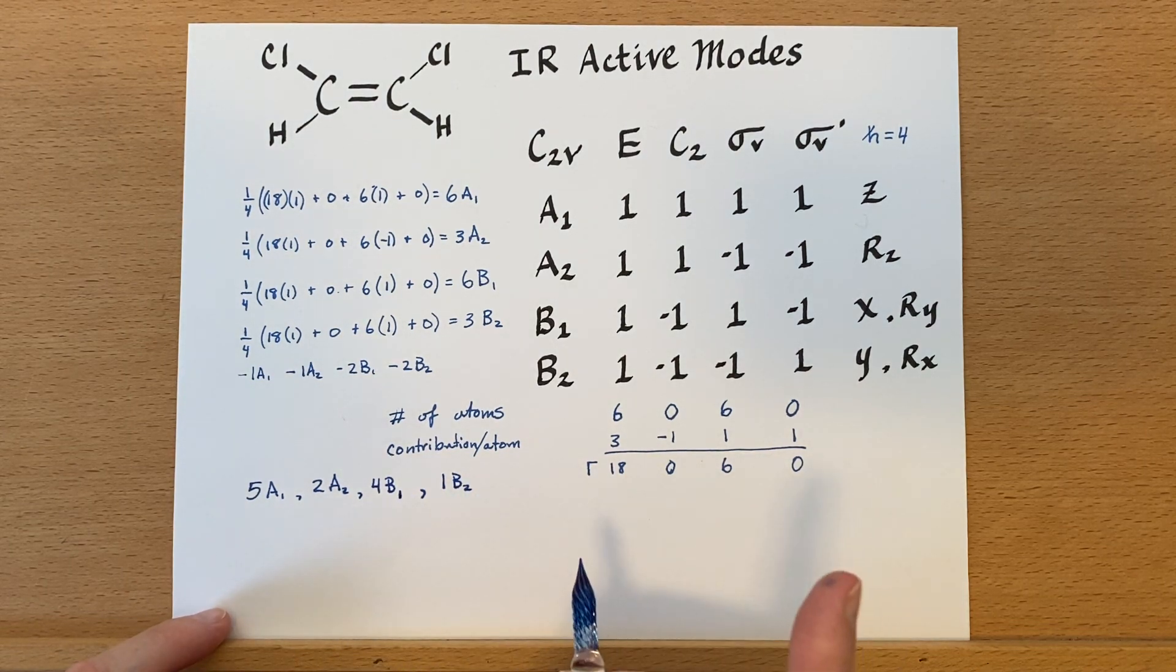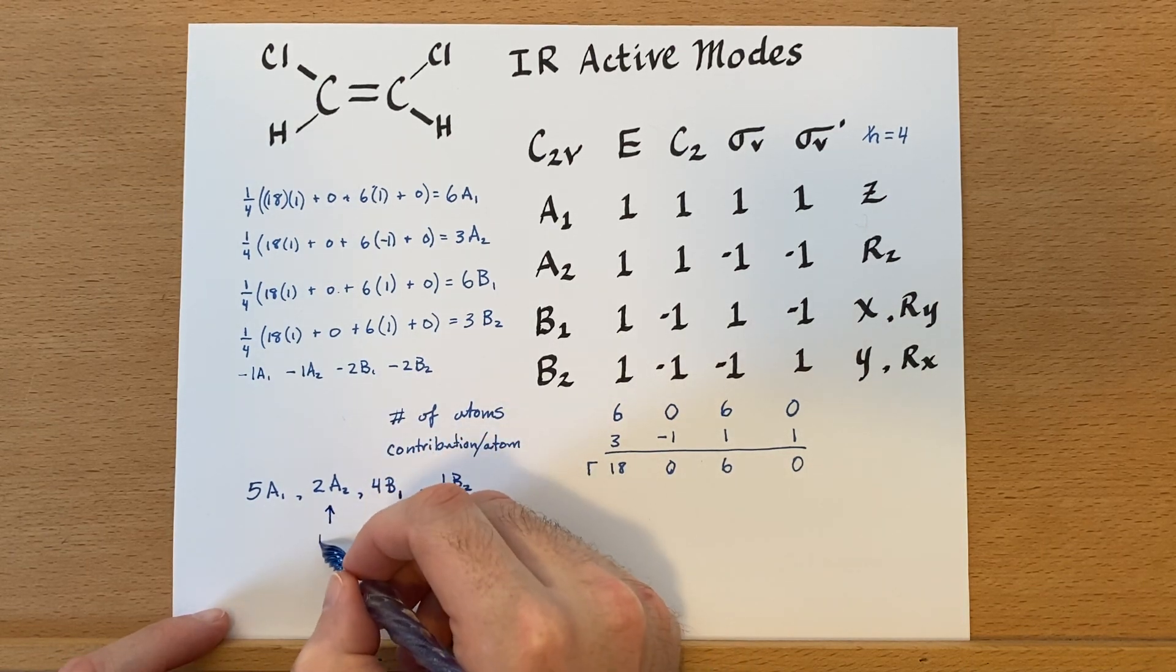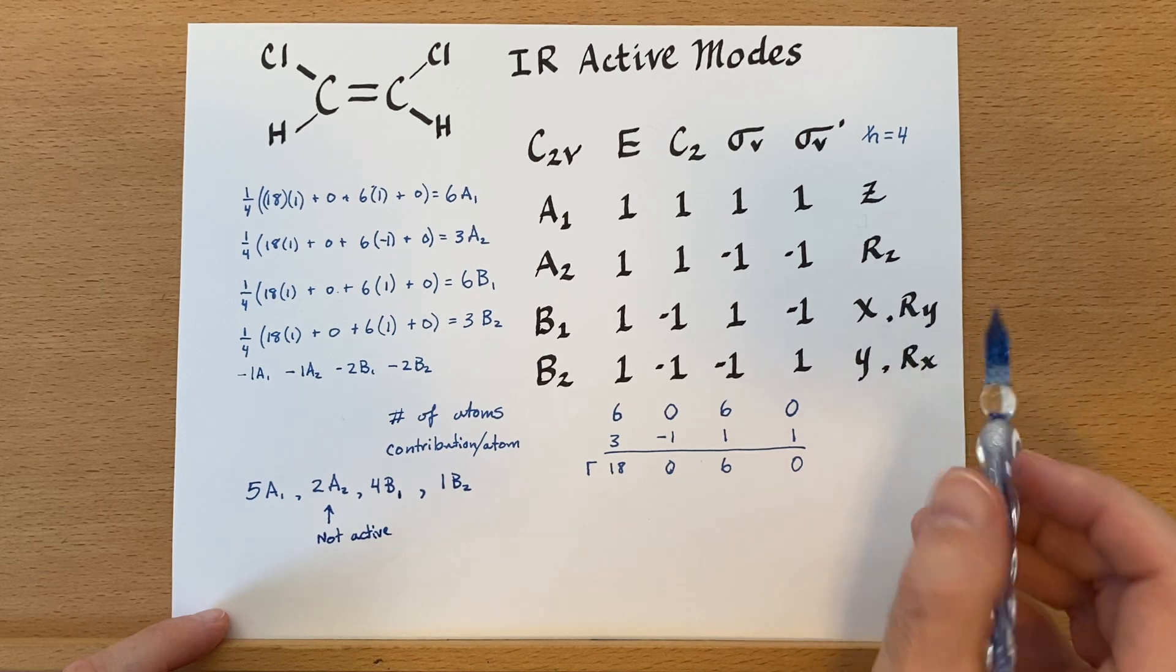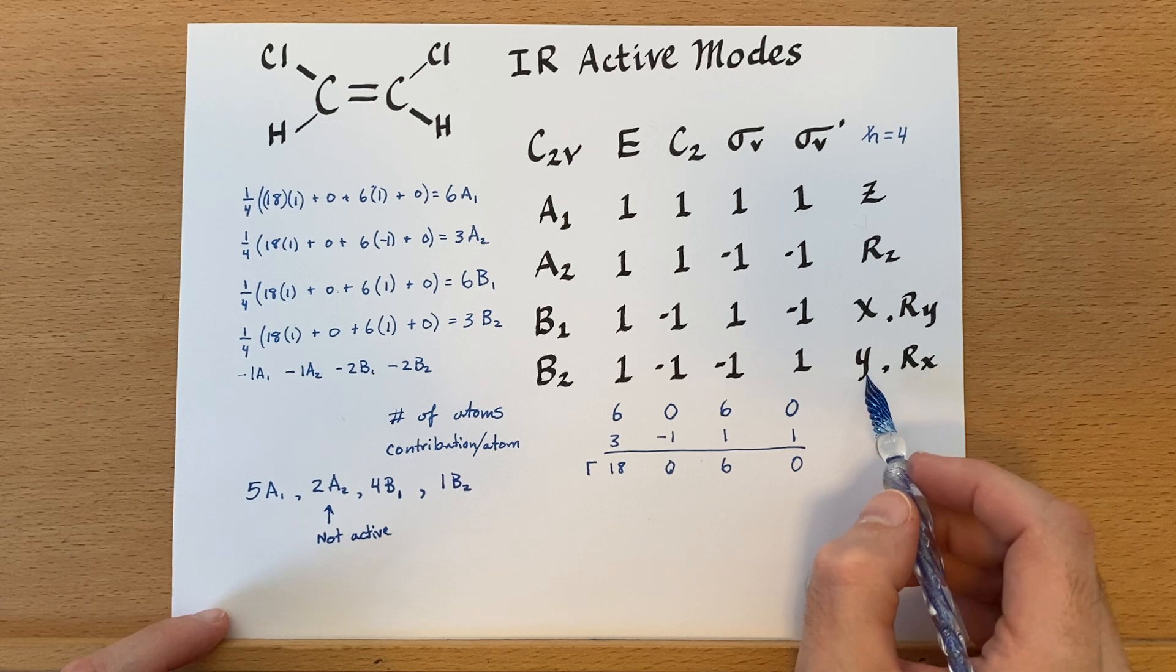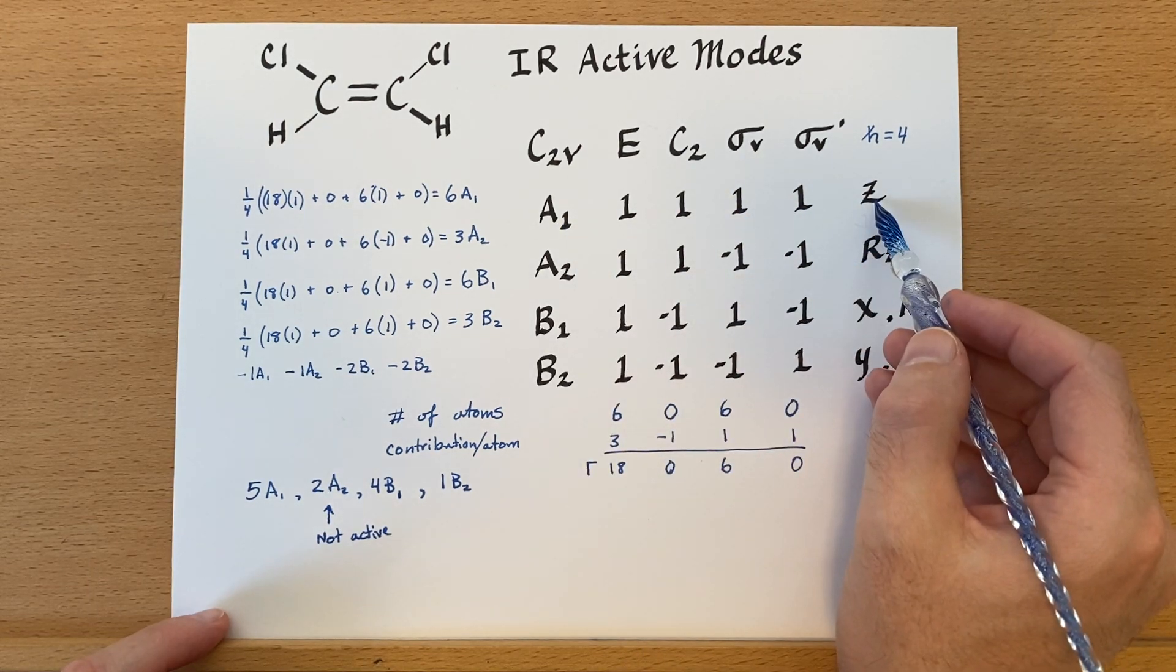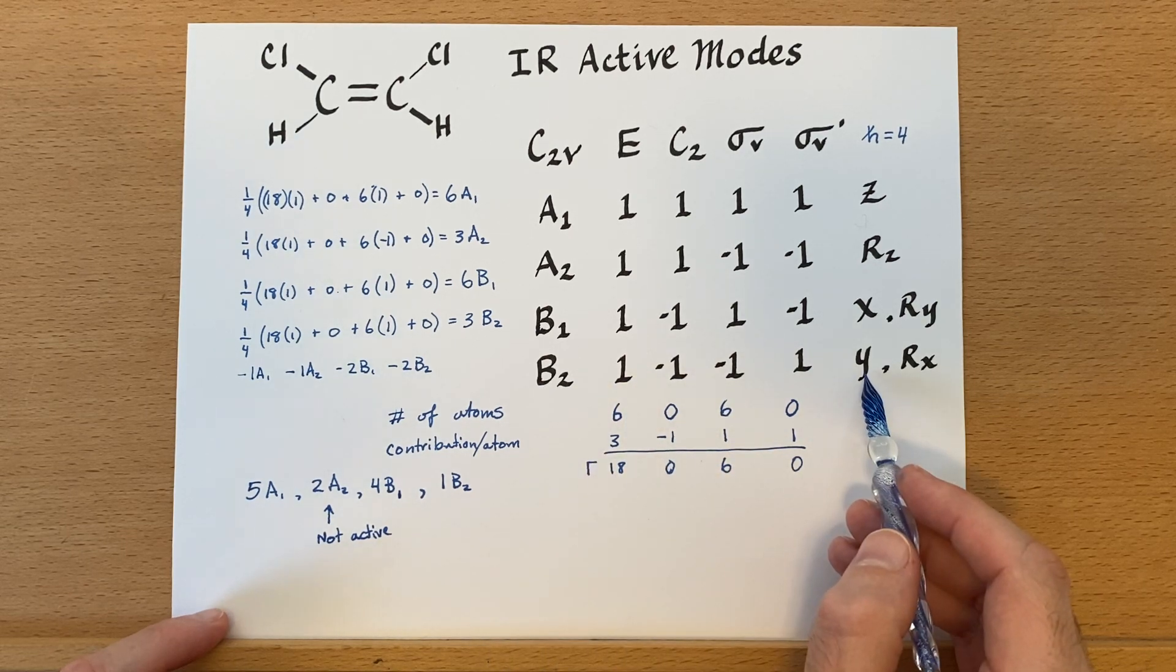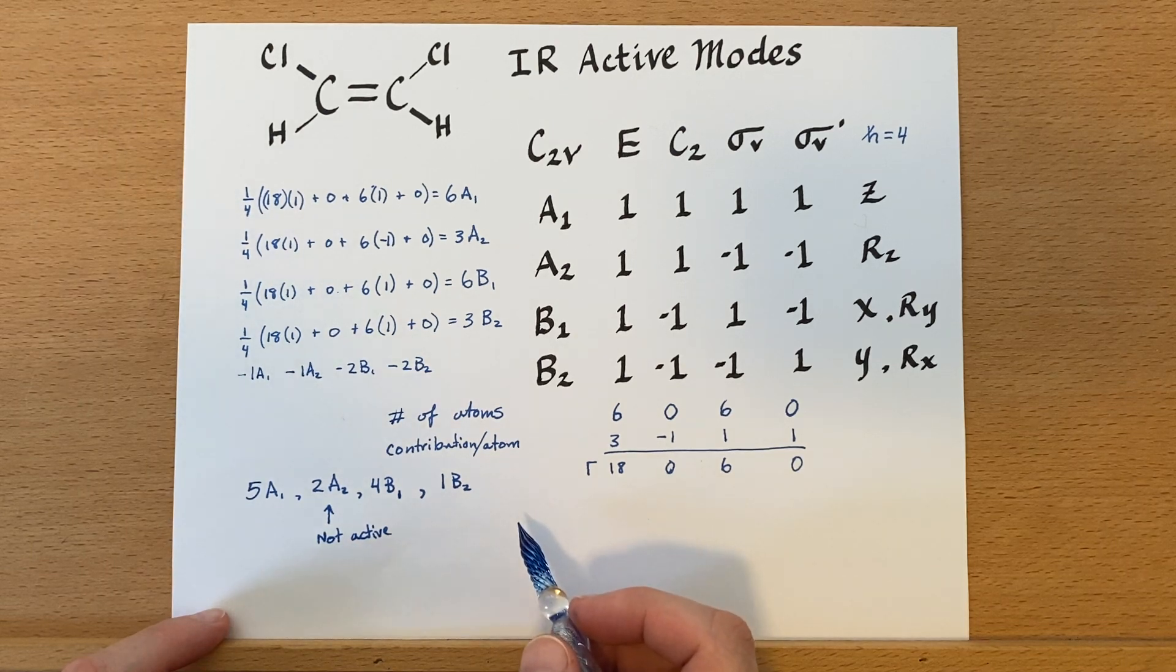Now, not all of these are IR active. A2 is not IR active. And we can tell that because the only ones that are IR active are the ones that have the same symmetry as one of the coordinate axes. So, A1 has the Z coordinate axis symmetry, B1 has the x-axis, and B2 has the y-axis. A2 is just a rotation, doesn't count for IR active modes.